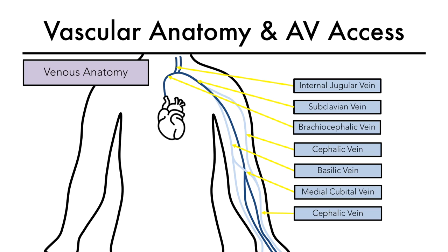Using the basilic vein for access often involves superficializing it first — that is, bringing it up along a more superficial plane to facilitate easier access for needle insertion. This procedure is called basilic vein transposition. With this, the basilic vein can now be used more conveniently for access.